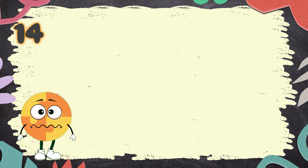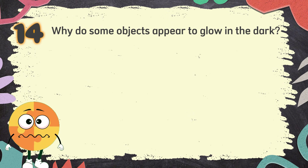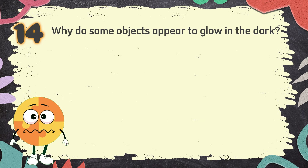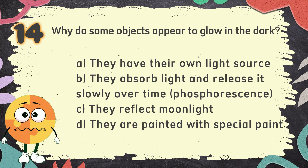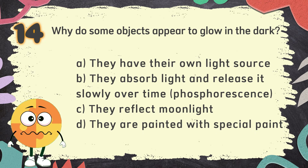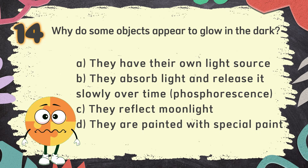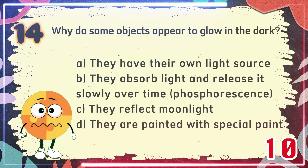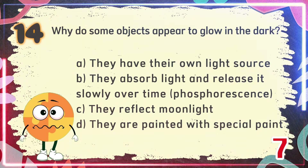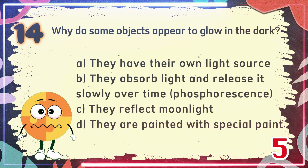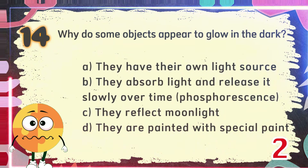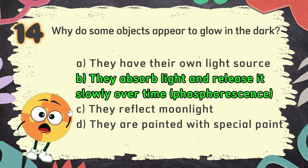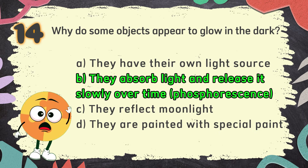Number 14. Why do some objects appear to glow in the dark? The choices are: A. They have their own light source, B. They absorb light and release it slowly over time — phosphorescence, C. They reflect moonlight, D. They are painted with special paint. The correct answer is B: They absorb light and release it slowly over time — phosphorescence.